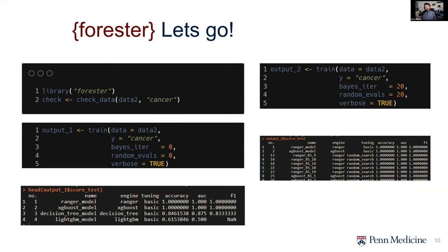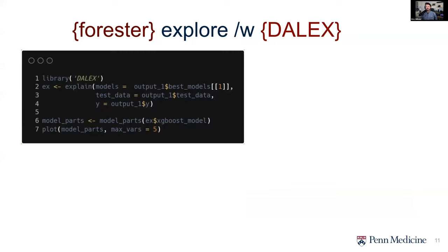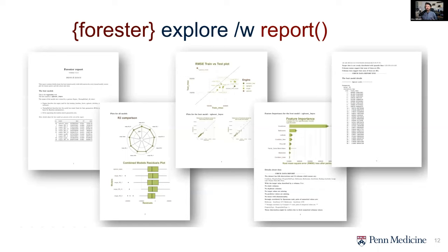But that's obviously not where you want to stop. You want to know how your model is making decisions — and how do you explain to someone in medicine which features are being used? Two ways to do this. One is with the DALEX package — it's useful for multiple types of modeling, not just Forrester. A couple lines of code give you really nice plots that help you explore model comparison and the features used by different models — what's driving your Ranger model versus your XGBoost model. Alternatively, Forrester has a built-in Report function that generates a report containing the ranked model list, group plots comparing the best models, and the data check report from the beginning.